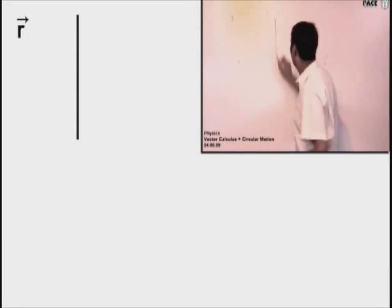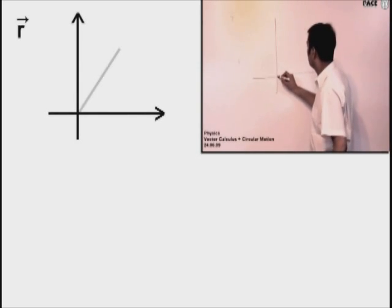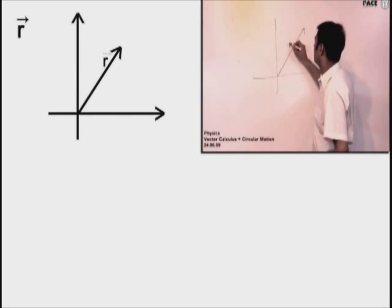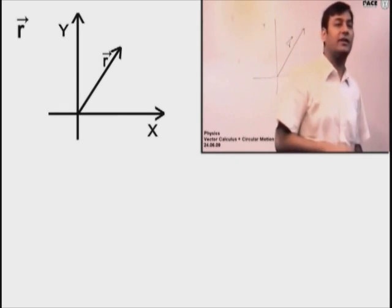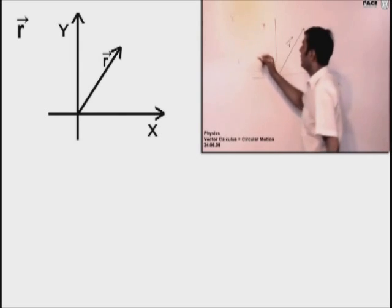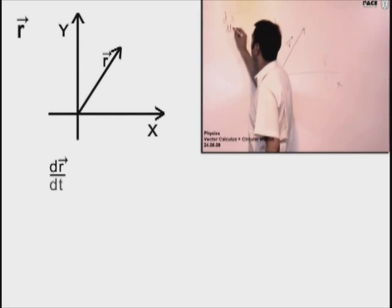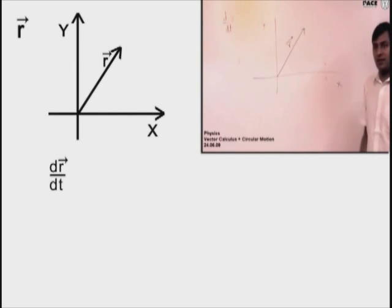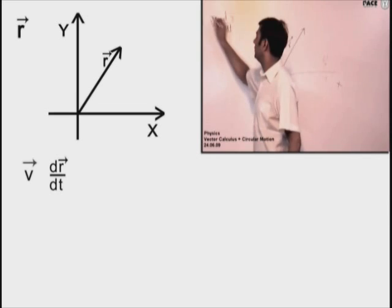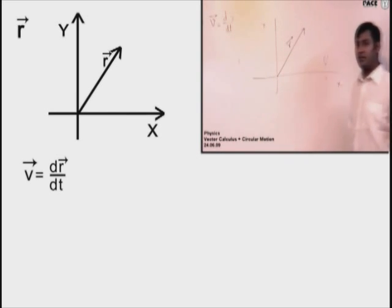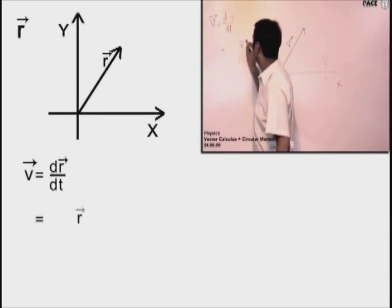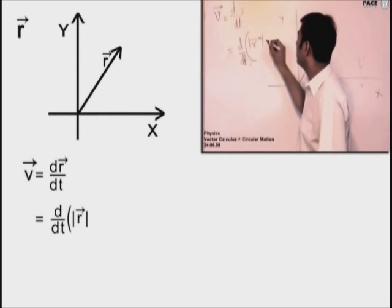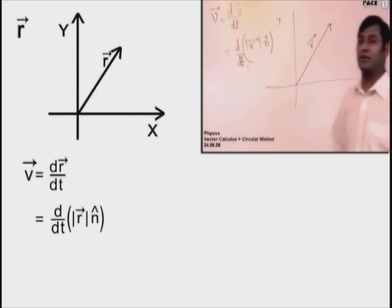If r is the position vector — and you know what a position vector means — with x and y axes defined, if r is the position vector of a particle, then dr/dt is the velocity. Now, can I write r vector as its magnitude multiplied by r-hat, the unit vector? Yes, and this unit vector is in the direction along the r vector.